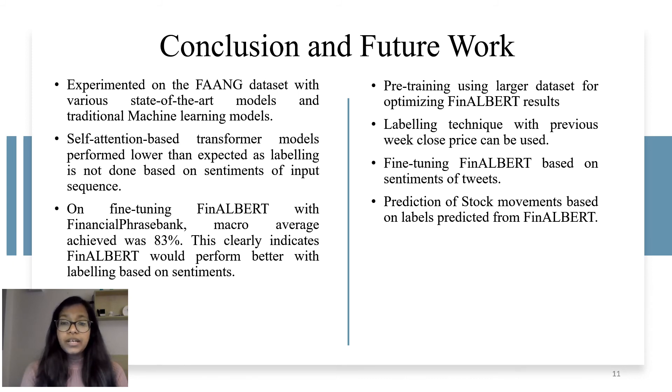We also experimented by fine-tuning financial phrase bank dataset. This dataset is also used in FinBERT for testing performance of their own model. It consists of 2,264 English sentences selected from financial news. These sentences are manually annotated by 16 professionals. The learning after fine-tuning our FinALBERT with financial phrase bank was that we were able to achieve 83% F1 score. This helped us infer that if we trained FinALBERT with sentiment-based labels, higher accuracy would be achieved.